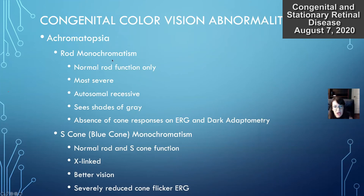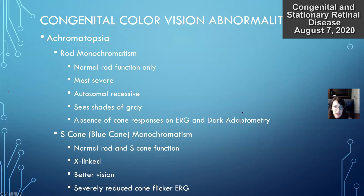Achromatopsia has two types: rod monochromatism and S-cone (blue cone) monochromatism. Rod monochromatism means you only have normal rod function — it's the most severe type, with no functioning cones. Patients only see shades of gray, have absence of cone responses on ERG, and abnormal cone responses on dark adaptometry. This tends to be autosomal recessive. S-cone monochromatism patients have functioning rod and S-cone function, so they can see blue colors, but it's clinically very difficult to distinguish from rod monochromatism.